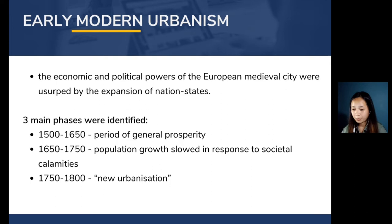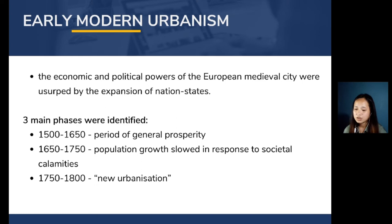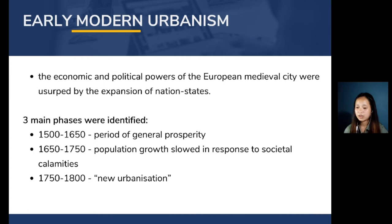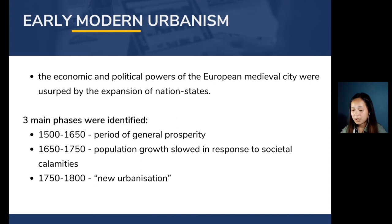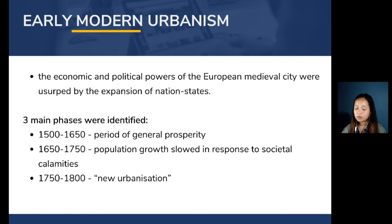In early modern urbanism, the economic and political powers of the European medieval city were usurped by the expansion of nation-states. Three main phases are identified: first, 1500 to 1650, a period of general prosperity with widely distributed urban growth; second, 1650 to 1750, when population growth slowed due to social calamities such as war, plague, and famine combined with cyclical economic downturns from rising labor costs, falling rents, and technological stagnation; third, 1750 to 1800, a period of new urbanization with growth of smaller cities and the rise of new cities within the urban system.